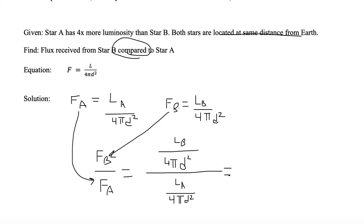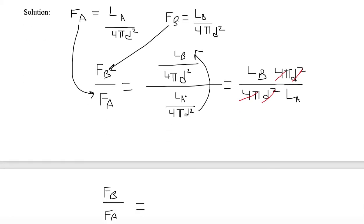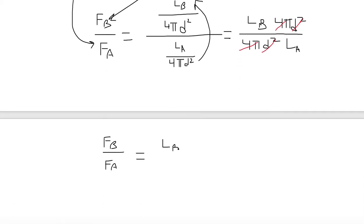We need to write this in a simpler format since we have too many division signs. Luminosity of B is in the numerator, so we keep it. Four pi d squared is in the denominator, so we put it there. L sub A is also in the denominator, so we add it below. The four pi d squared from the denominator of flux of A gets kicked up to the numerator. We can then eliminate the four pi terms and the d squared terms. The only thing we're left with is the luminosity of B relative to the luminosity of A: flux of B divided by flux of A equals luminosity of B divided by luminosity of A.